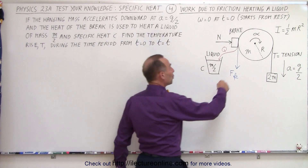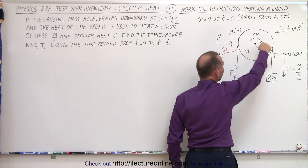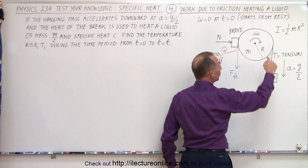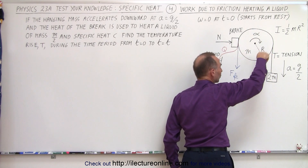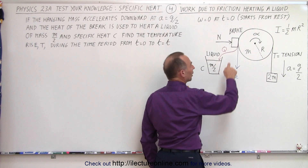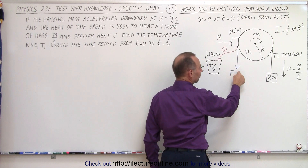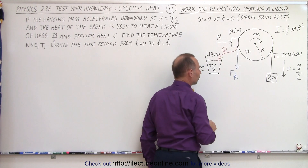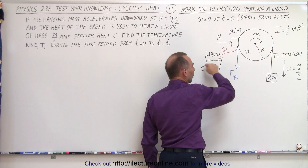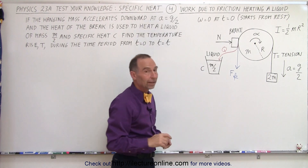What we have here is a wheel of mass m that's free to rotate on frictionless bearings. We wrap a string around that wheel and at the end of the string we place an object with mass 2m. We let things go and the wheel begins to accelerate in rotational motion, and the object begins to accelerate downwards, with the acceleration equal to g over 2. On the other side we have a brake being pushed into the wheel to slow down the acceleration, because of the friction force generated by this normal force. The heat generated in that braking action is then allowed to go into a container that has a liquid of mass m over 2 and specific heat equal to c.